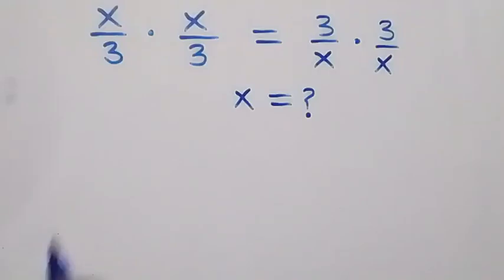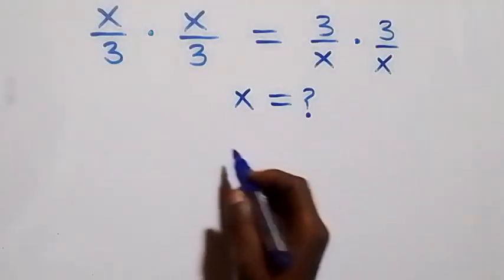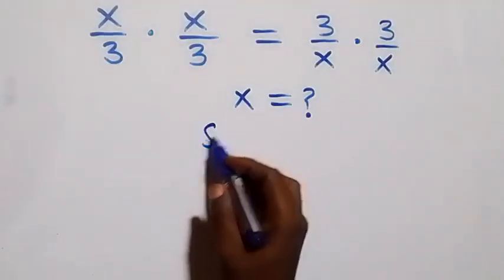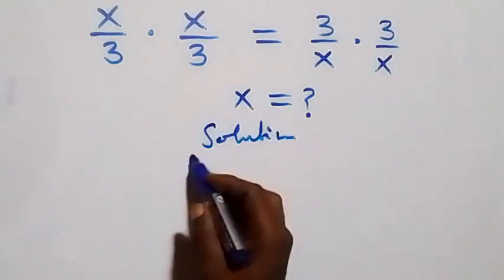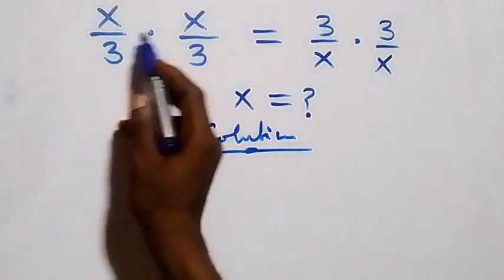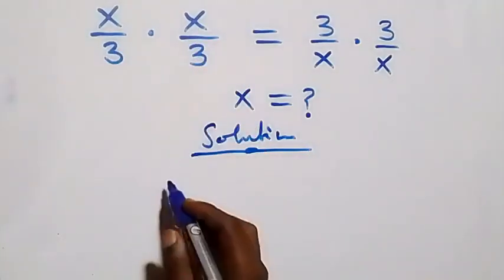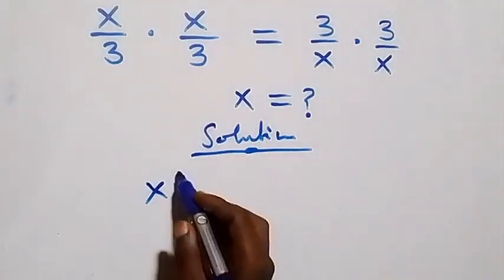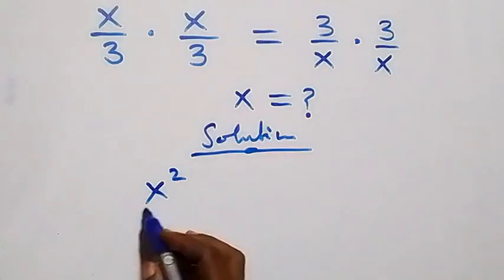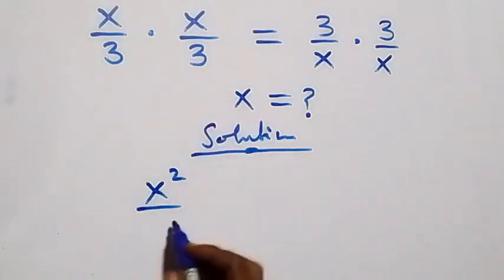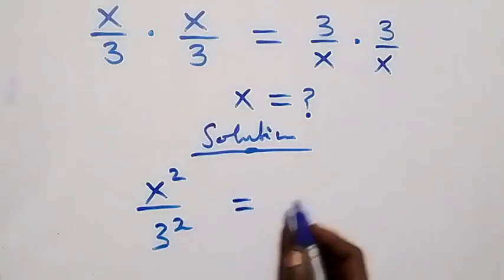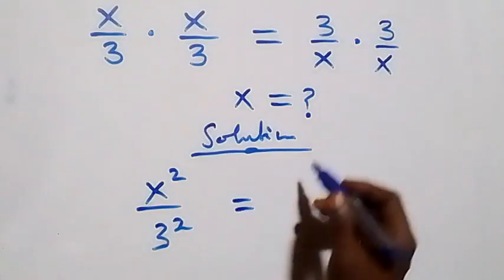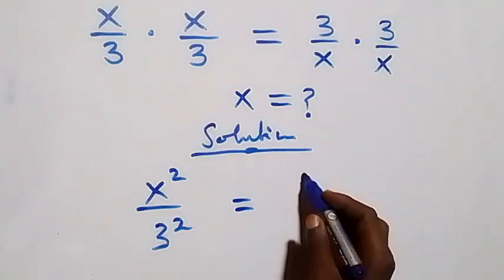Hello, you are welcome. How to solve this nice algebra problem. From what we have here, we can rewrite this as x times x, that's x squared, over three times three, that's three squared, which equals three squared as well.